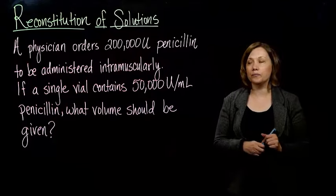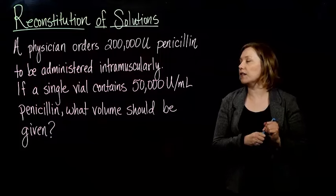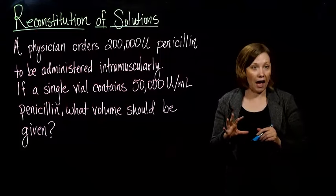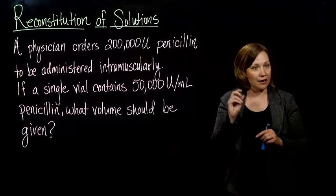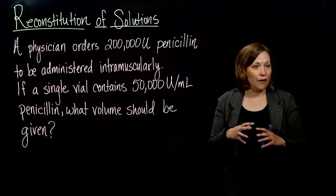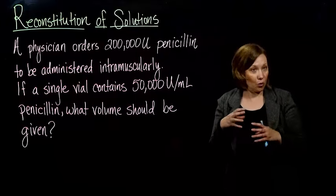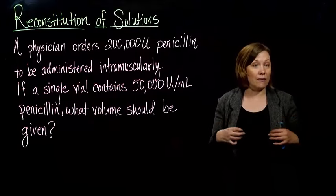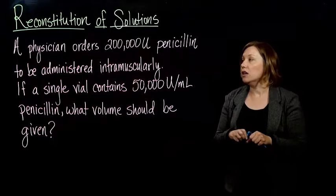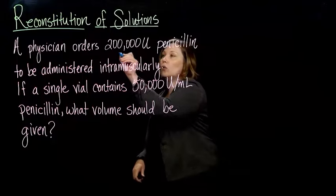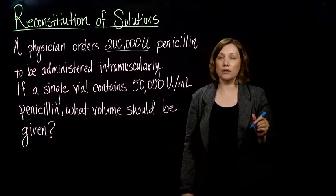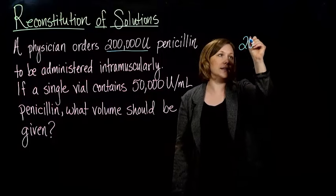So let's figure this out. There are two things I need: the ordered dose, and the conversion factor I'm going to use — what medicine I have on hand, which is what we'll multiply by. The ordered amount is 200,000 units, so I'm going to write that down.